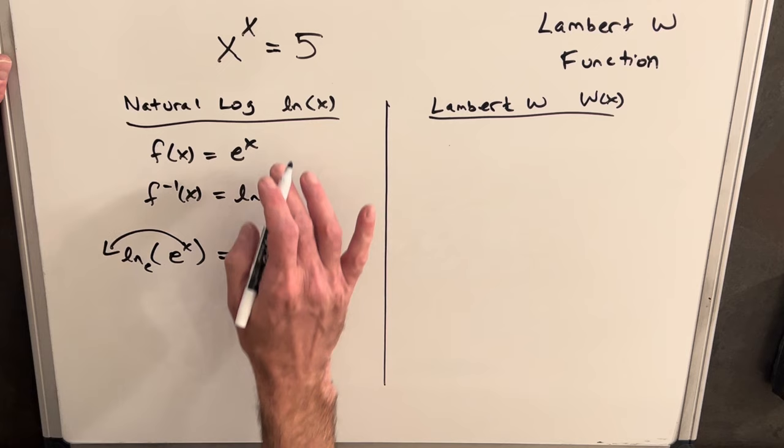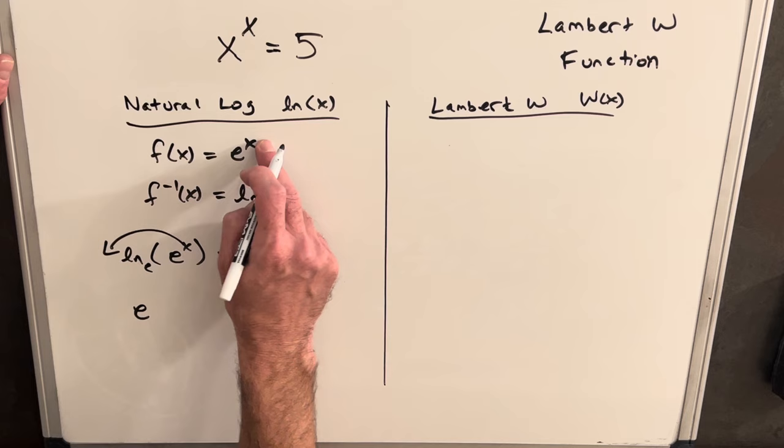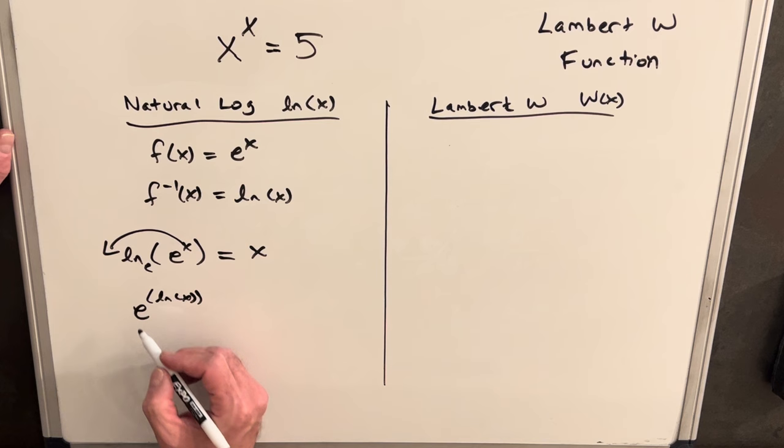But then again we can do it the other way. We can use our f of x which is e to the x, but for our x we're going to plug ln of x and again we have this kind of cancellation and we get back our x.